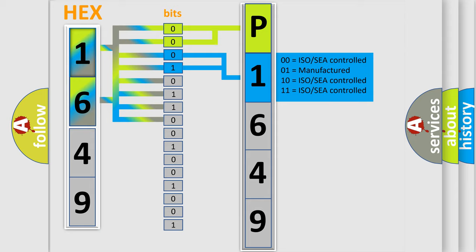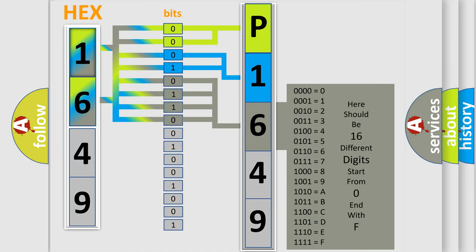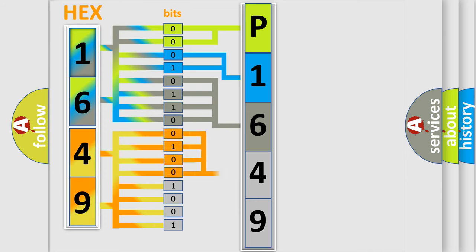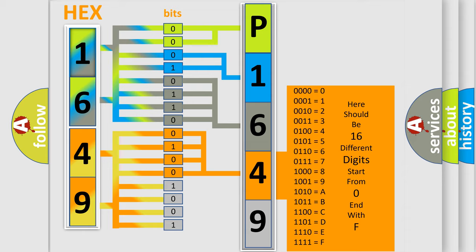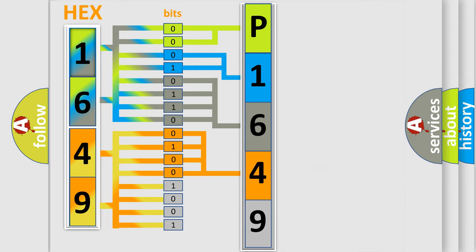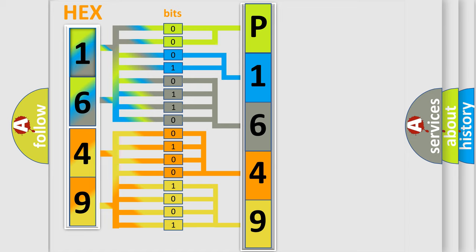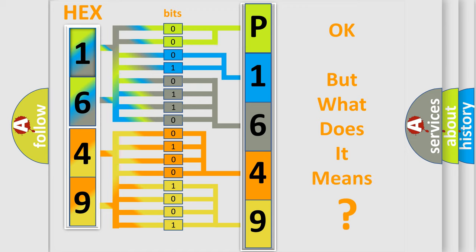The next two bits determine the second character. The last bits of the first byte define the third character of the code. The second byte is composed of a combination of eight bits — the first four bits determine the fourth character, and the last four bits define the fifth character. A single byte conceals 256 possible combinations. We now know how the diagnostic tool translates received information into a more comprehensible format.